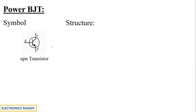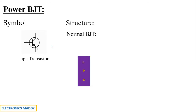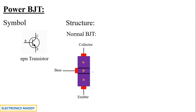Now let us look at the structure of a normal BJT. It has three layers — N, P, N — and three terminals: collector, emitter, and base, as per the symbol already shown. The base region controls the flow of charge carriers, turning the device on or off. That is why this comes under a fully controlled device, as seen in the classification of power semiconductor devices in previous videos.